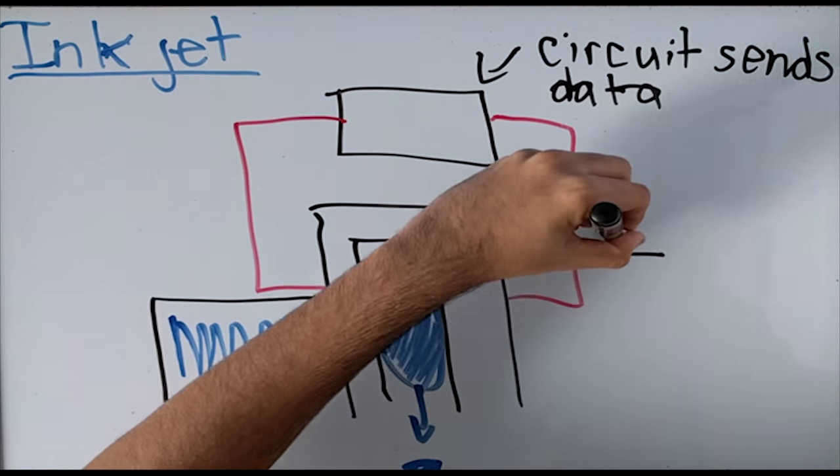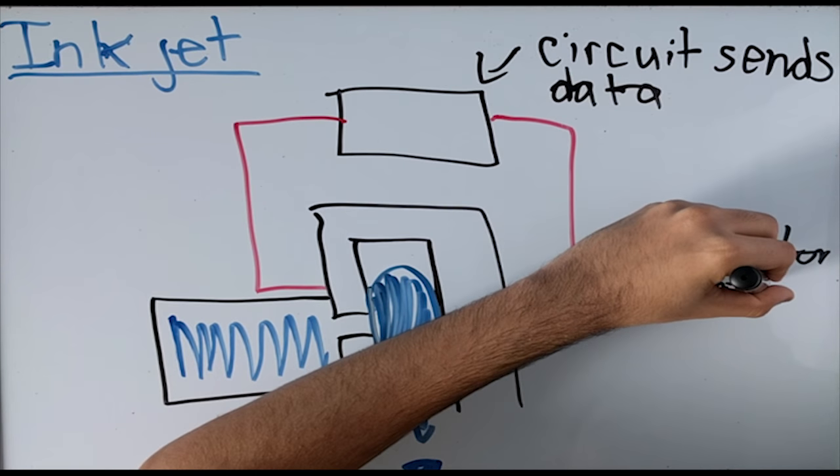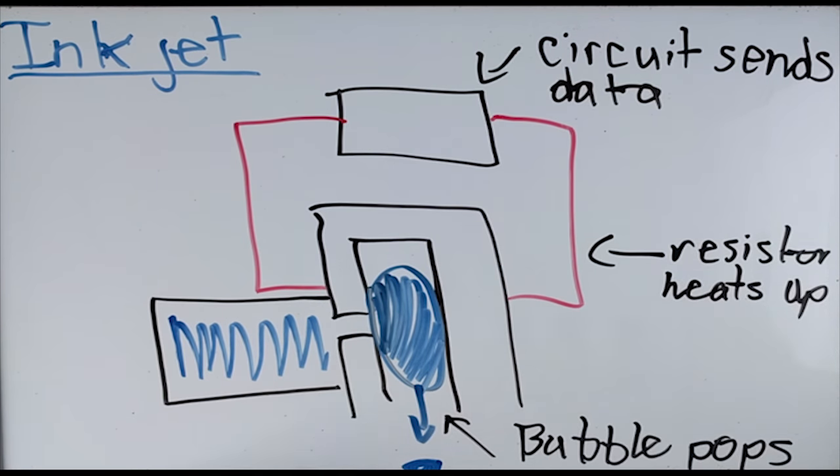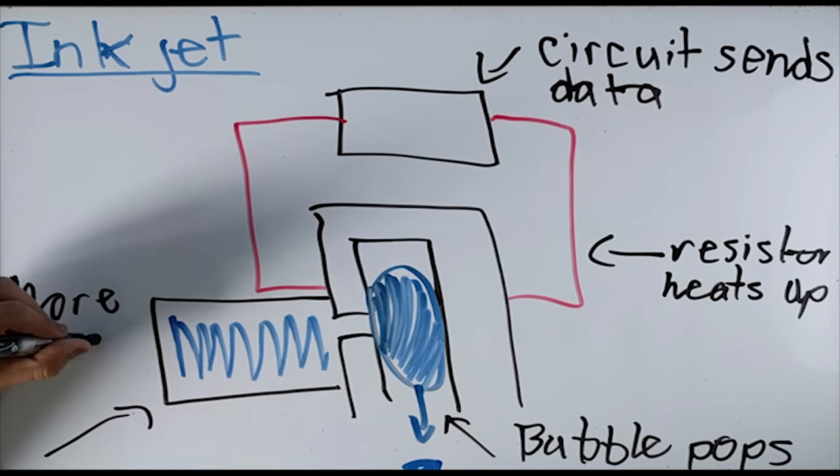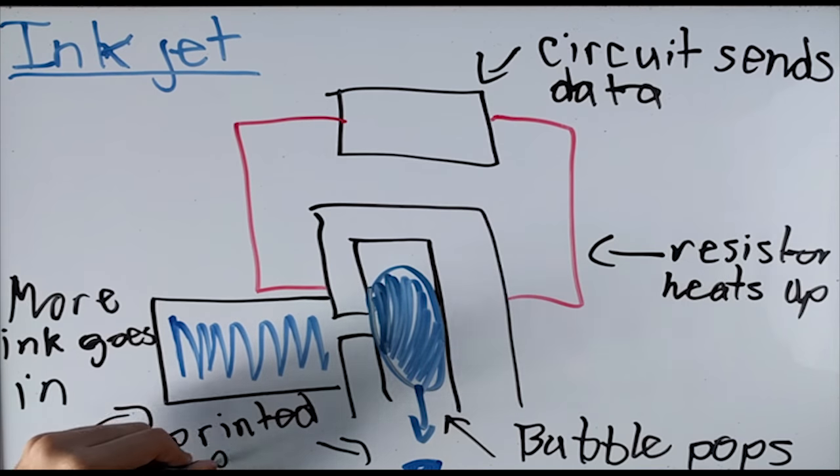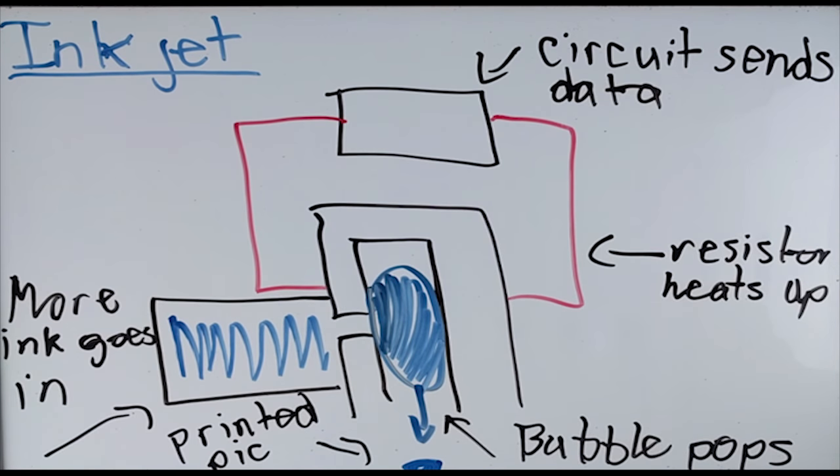An electric current is passed through a resistor heating it up and boiling the ink. The ink boils and forms a bubble of ink vapor and eventually pops, projecting the ink onto the paper. The collapsing bubble forms a vacuum drawing in more ink. This whole process occurs for the rest of the jets.